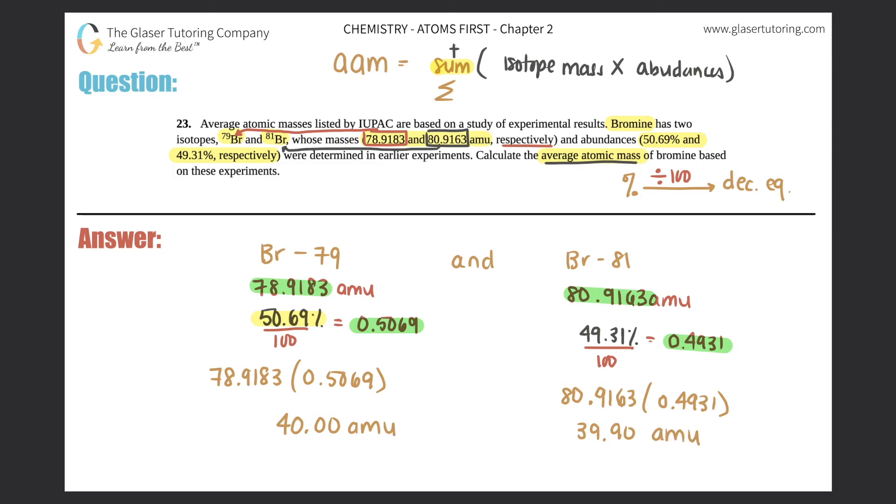So now, what do we do once we have those two numbers? We just sum them all up. We just add them all up. So it would be the 40.00 AMU plus the 39.90 AMU. So when you add that, you get 79.90 AMU. And that is the average atomic mass.